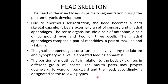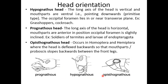The position of mouthparts in relation to the body axis differs among different groups of insects. The mouthparts may project downward, forward, or backward relative to the head. Head orientation is categorized based on the arrangement of the mouthparts. When the mouthparts are directed downward at a right angle to the body axis, this is known as the hypognathous type. When the mouthparts are horizontal and anterior, where the occipital foramen is slightly inclined, this is the prognathous type, seen in soldier termites and larvae of Endopterygota.